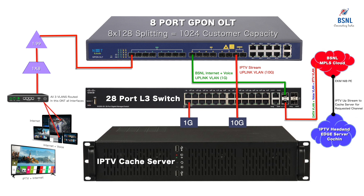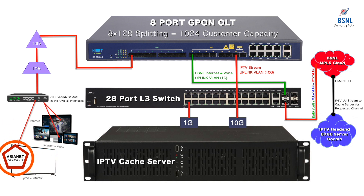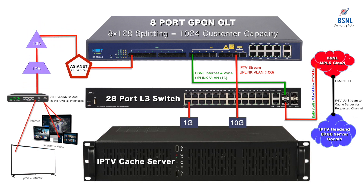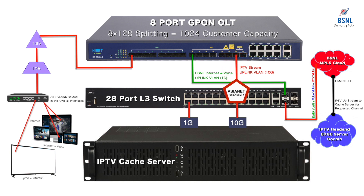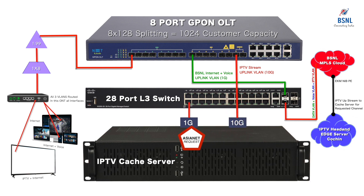Now we will see the traffic flow of an IPTV request from the customer. The customer will have a smart TV or a combination of a non-smart TV with a smart TV box — such as Android, Apple, Chromecast, FireStick, etc. When the TV is switched on, it will request its home channel — say Asianet, which is a popular Malayalam channel in Kerala. The channel request will originate from the TV to the Wi-Fi router to the ONT, and the ONT will route the request tagged with the IPTV VLAN through the outdoor network to reach the OLT PON port. The OLT will then route the IPTV VLAN to the cache server through the 10G port, and thus the customer-side request reaches the cache server.